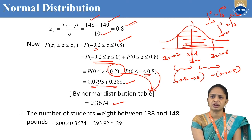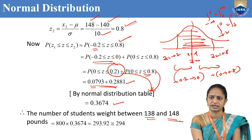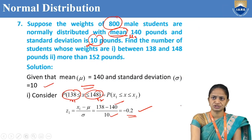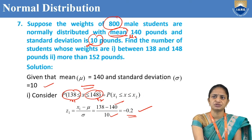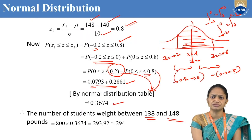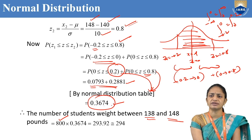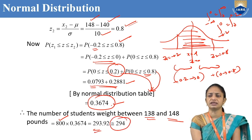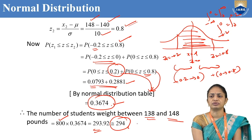Therefore, the number of male students whose weight is between 138 and 148 pounds is 800 into 0.3674, which gives approximately 294 students.